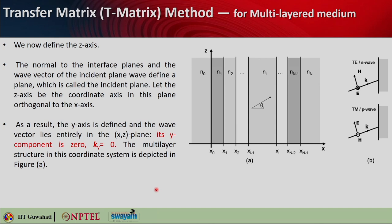The normal to the interface plane and the wave vector define the incident plane. In this case, the incident plane is basically the screen. We are assuming that the wave vector lies in the xz-plane, meaning the k_y component is zero. Even if it is not, you can still use the transfer matrix method, but the calculation becomes more complicated. So we assume the wave vector lies in the xz-plane.